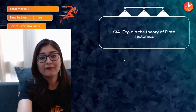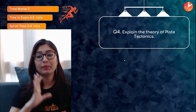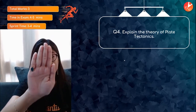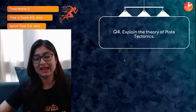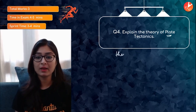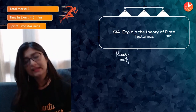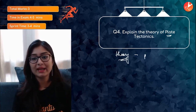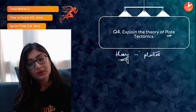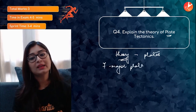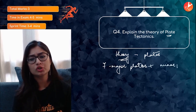Our fourth question: explain the theory of plate tectonics. According to scientists and geologists, the Earth's surface is divided into different plates — seven major plates and several other minor or small plates.